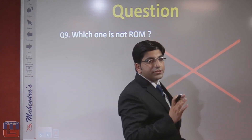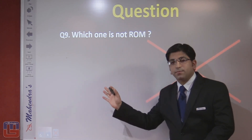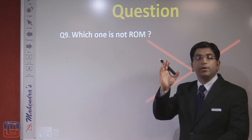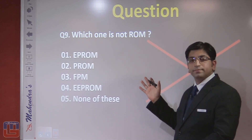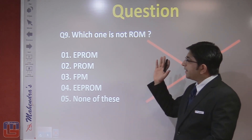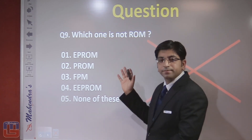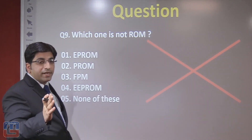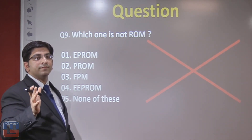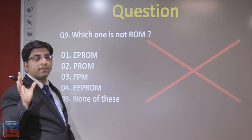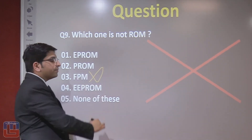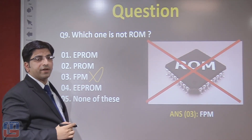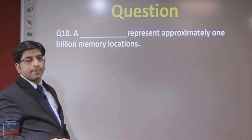Next question: which of the following does NOT come under the category of ROM (read-only memory)? The options include EPROM (erasable programmable read-only memory), PROM (programmable read-only memory), and EEPROM (electrically erasable programmable read-only memory, also called ultraviolet ROM). FPM is not a type of ROM, so FPM is the correct answer to this question.